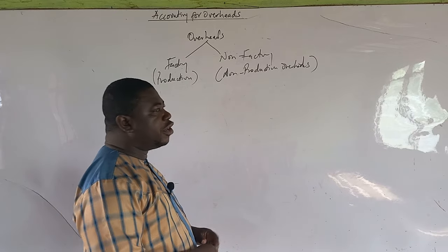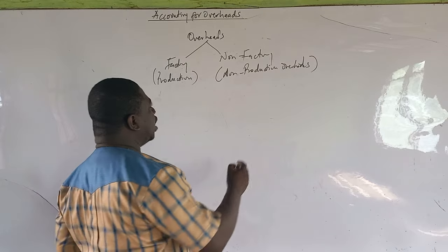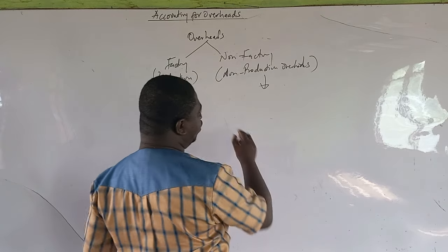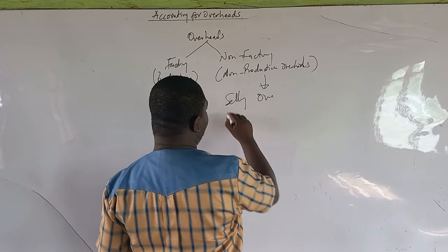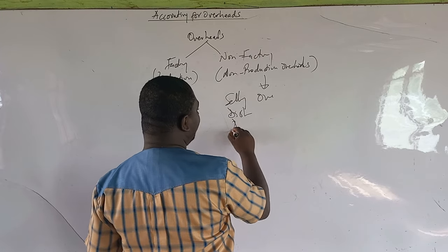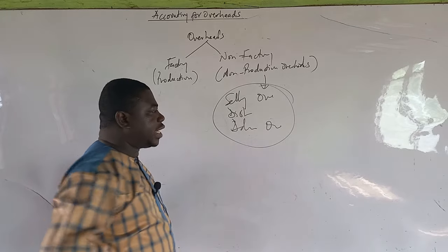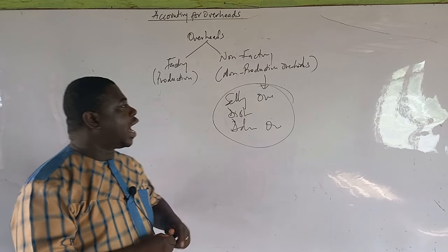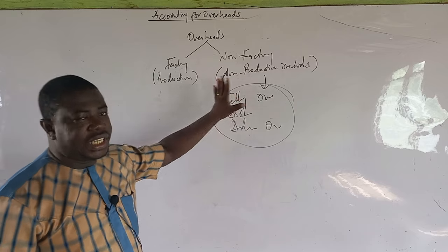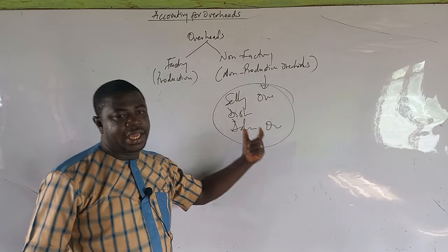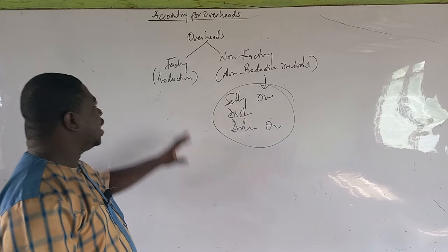I have explained the difference between production costs and total costs. Examples of non-factory overheads include selling overheads, distribution overheads, and administrative overheads. These — selling, distribution, and administration — are not incurred in the factory, and therefore are called non-factory or non-production overheads.